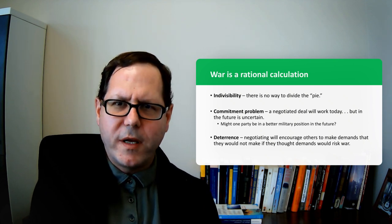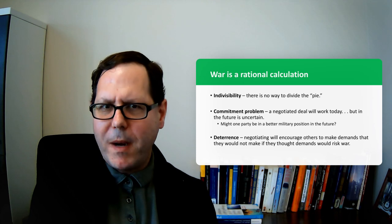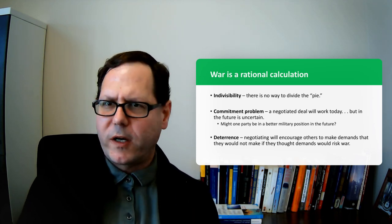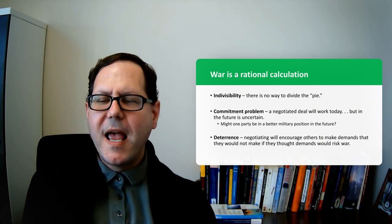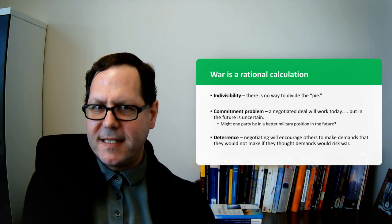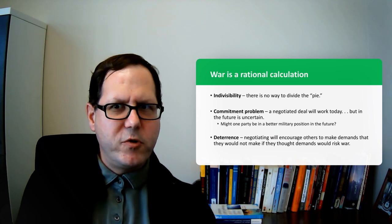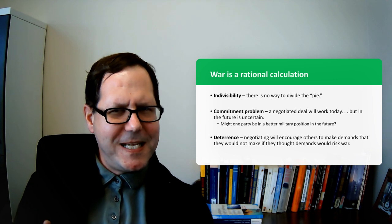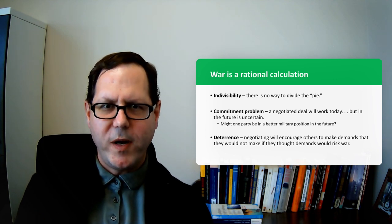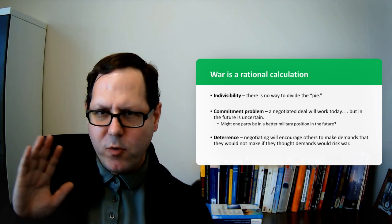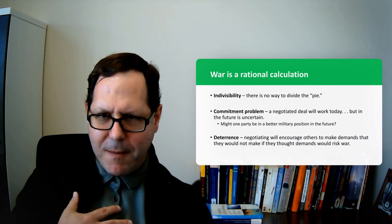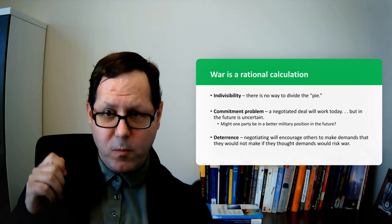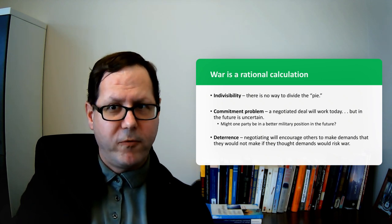Another situation where we think maybe war is rational is what we would call the commitment problem. That's where we could negotiate a deal today and it would work and we can divide up this pie and share out these resources and that would be fine. We'd both be satisfied today, but the future is uncertain. I'm looking into that uncertain future and I've seen the balance of power shifting between us. Maybe I see you gaining advantage in the future and me losing advantage in the future. I might say, this deal that we're going to work out, it's going to hold for all time, correct?